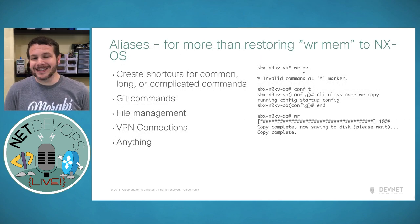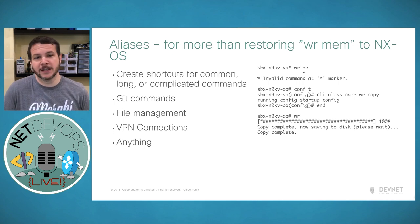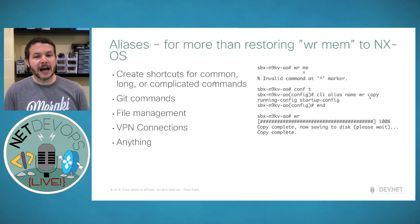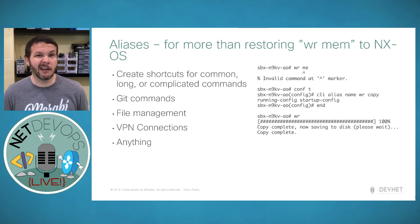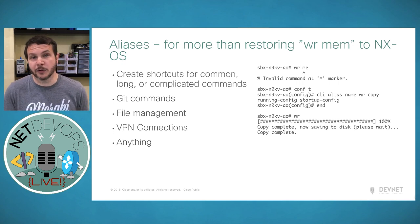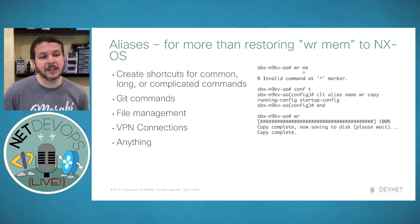Aliases are something network engineers first encountered on NX-OS — for example creating an alias 'wr' mapped to 'copy run start' because 'write mem' is an invalid command on Nexus. That same concept works inside bash and other shell terminals. Aliases are a great way to create shortcuts for common, long, or complicated commands — like complex git commands, file management, or connecting to VPN labs with OpenConnect.